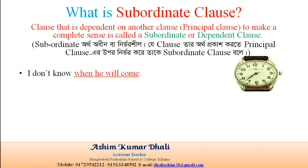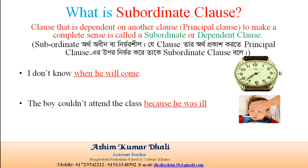Let's see the examples. 'I don't know when he will come.' 'The boy couldn't attend the class because he was ill.' Here, 'when he will come' and 'because he was ill' are dependent or subordinate clauses.